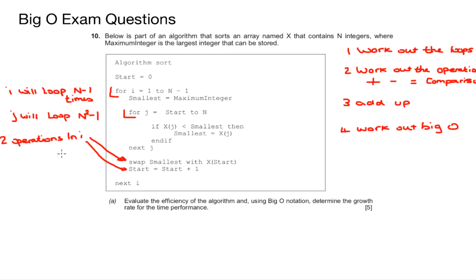It's not very clear to see that swap smallest with x bracket start bracket and start equals start plus one is actually inside the i loop itself. But because we have two operations and inside that loop the loop runs n minus one times, we can say that we have two n minus one. And it's important to point out here that swap smallest with x and start, and start equals start plus one, they both perform some kind of processing and therefore can be counted as an operation or a calculation, with swap swapping the smallest number and start incrementing by one.